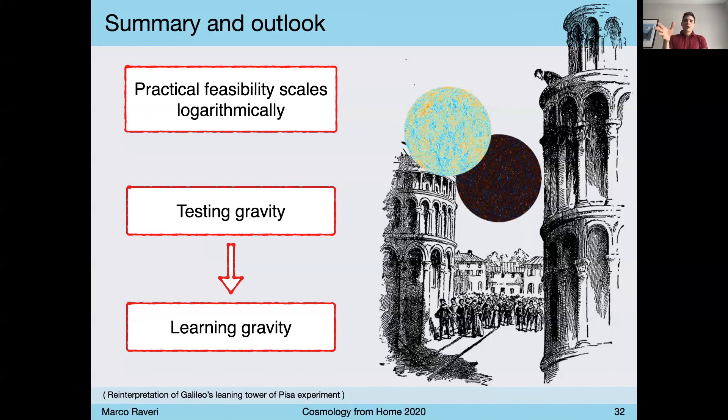The practical feasibility of this program scales logarithmically. So we have to show that we can do this exercise for one function or two functions, and then this can be extended to many more, paying only a logarithmic price. And this, I believe, is the most transformative conclusion that I want to tell you. We already have enough data power on cosmological scales that we can afford not just to test gravity on cosmological scales, but to learn gravity directly from the data.